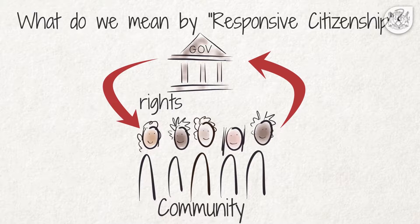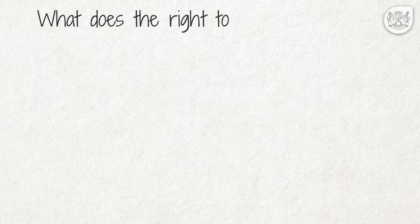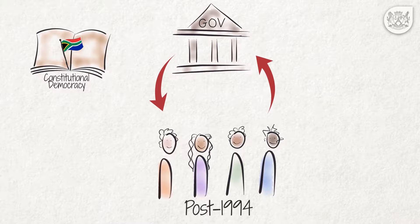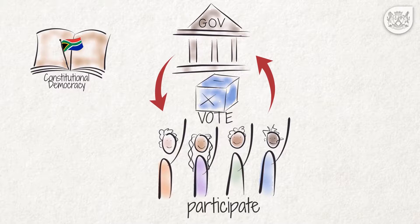What does the right to public participation mean for government? When South Africa became a constitutional democracy, its governance framework changed from one that was racially exclusive to one that is broadly representative, in the sense that all South African citizens have the right to vote and to participate in democratic decision-making processes.